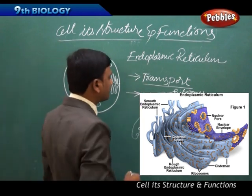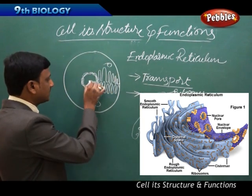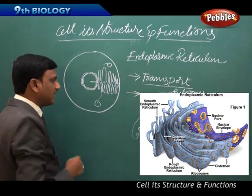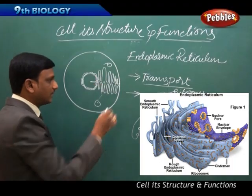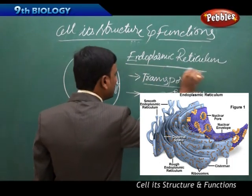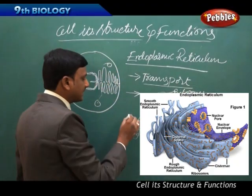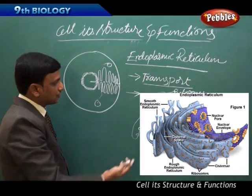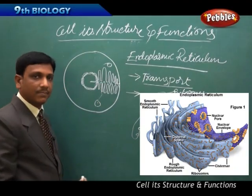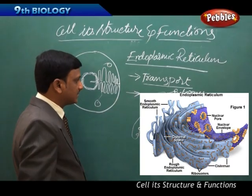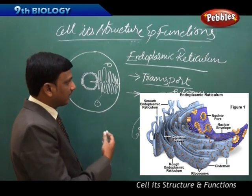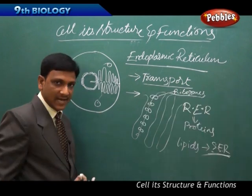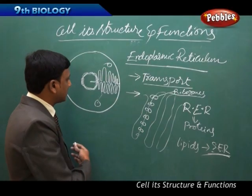So the two important functions of the endoplasmic reticulum are: first, transportation of substances and messengers inside the cell from one part of the cytoplasm to another, or from nucleus to other parts; and second, providing space for ribosomes and helping in the preparation of materials like proteins and lipids. It also provides structural support as the basic skeleton of the cell, made up of tubes and sheets.